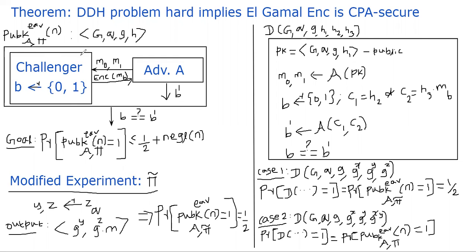For our encryption scheme to be CPA secure, the probability that an adversary can win this game must be at most one-half plus a negligible amount, negligible in the security parameter n. You can think of n as the number of bits in the group order Q. This negligible quantity is very, very tiny. That's the goal we are going to prove.